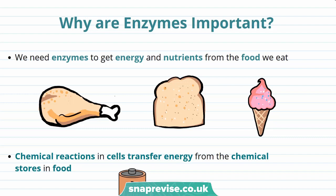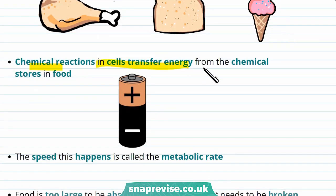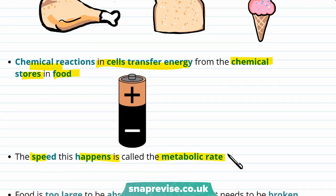Enzymes are used in the many chemical reactions that happen in your body. We also need enzymes to get energy and nutrients from the food we eat. This energy and these nutrients help us do things like grow and move about. Chemical reactions in the cells transfer energy from the chemical stores in food, and the speed this happens is called the metabolic rate.